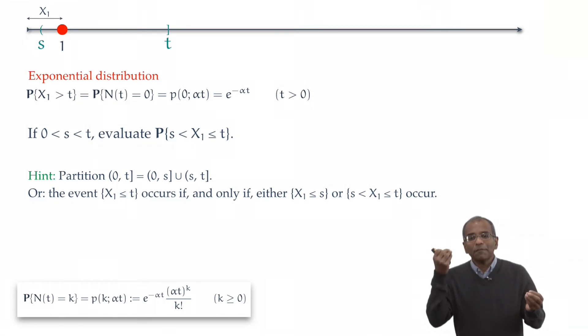that the first arrival occurs on or before s, or the first arrival occurs after s and before t. Now, pause the lecture again, and with this suggestive partition in hand, see if we can work through the probability.